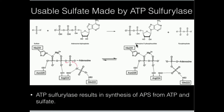This is actually adenosine 5-prime phosphosulfate, sometimes abbreviated as APS — adenosine phosphosulfate. It's unusual in the sense that normally there's a phosphate here but we have a sulfate instead. This sulfate is going to be transferred to various groups by enzymes called sulfotransferases, but we need to do one more step in order to get it into PAPS, because this is just APS.